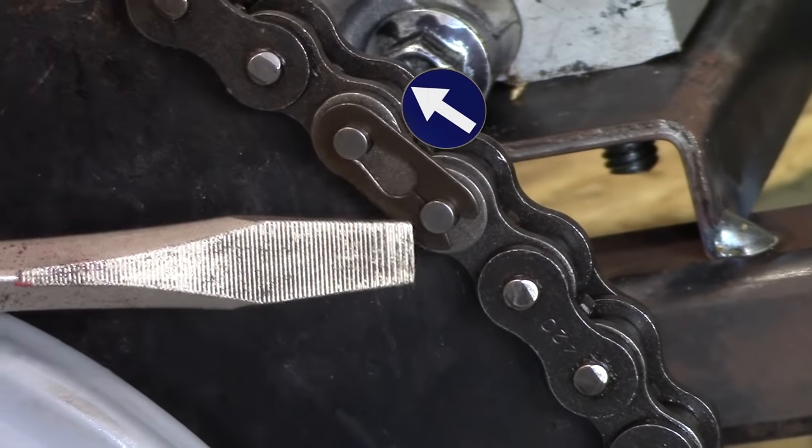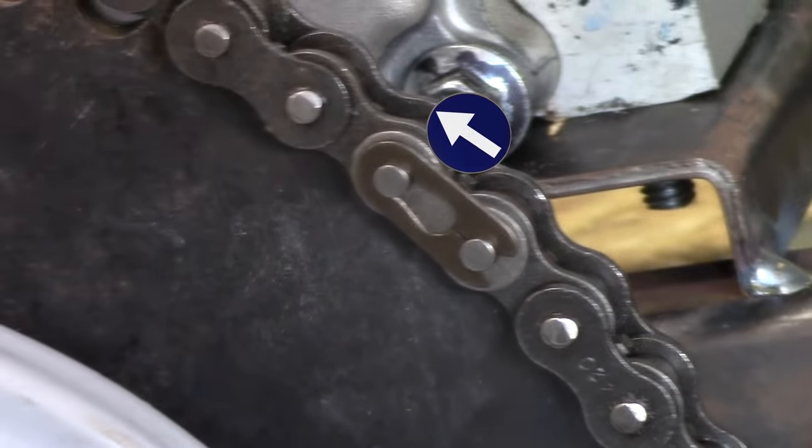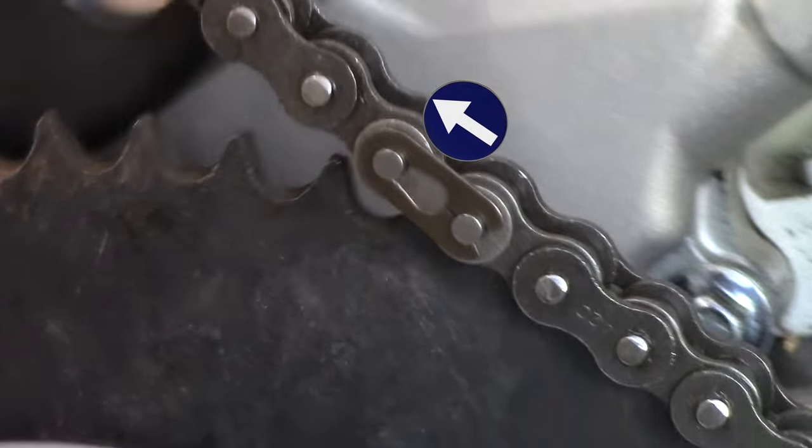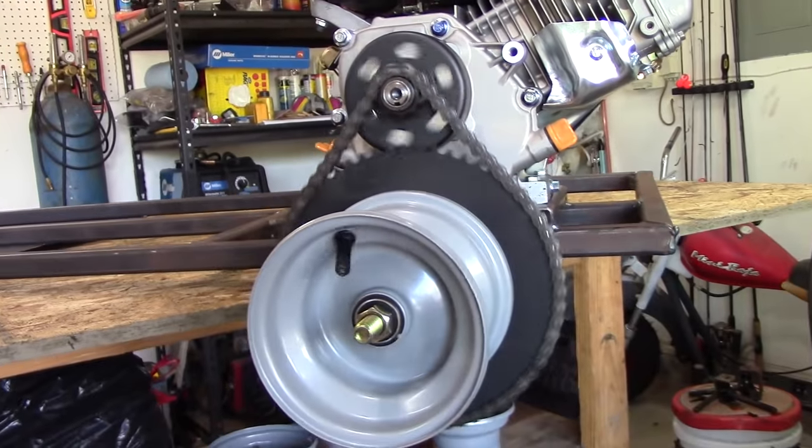So orientation, very important. There's a closed end and an open end. The closed end is the head and it follows the direction of travel of the chain. Just like that.